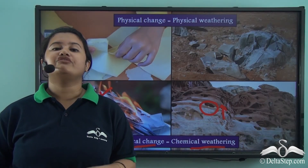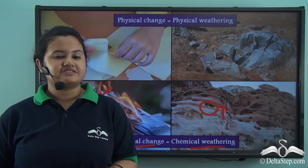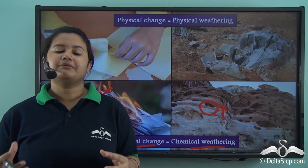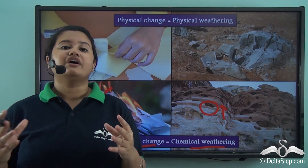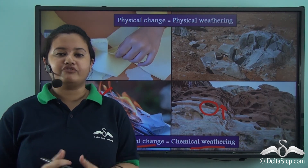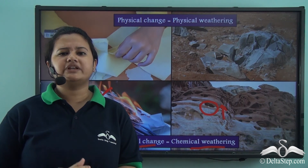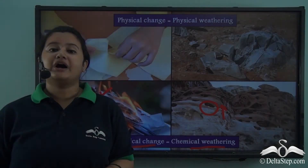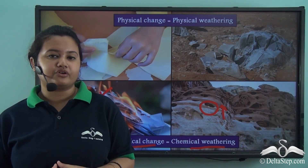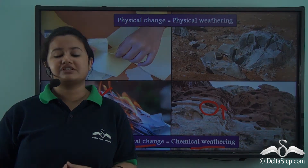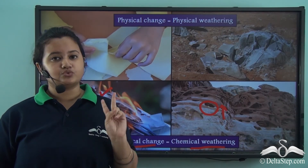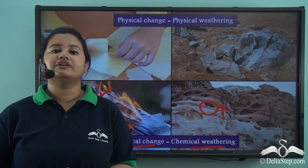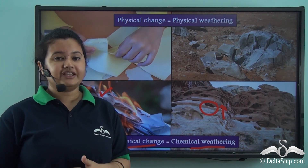In this video we understood the meaning of weathering. Weathering is the breaking and disintegration of rocks in the same place. Weathering happens due to different factors known as agents of weathering: rain, frost, wind, temperature changes, human beings, plants, and animals. Apart from this, weathering also depends on the topography of the land and the structure of rocks. Finally, weathering can be of two types — physical weathering and chemical weathering. In our next video, we will discuss these different types of weathering in detail.